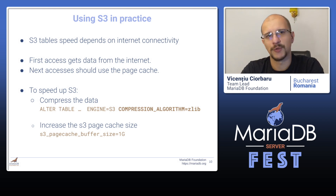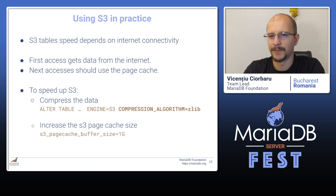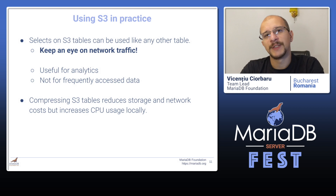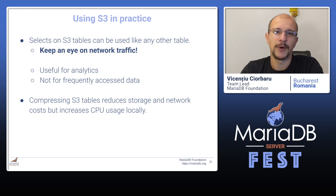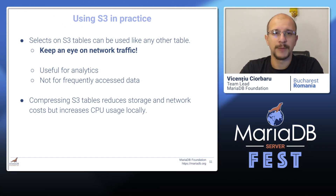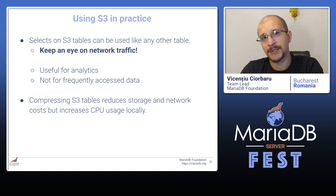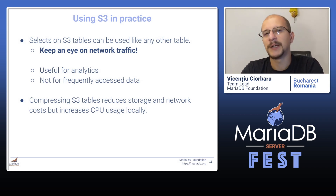If that is still not enough, you can choose to increase your page cache — that way you can store more blocks in memory and go less via the network. Because this is a network-based system, you need to keep an eye on network traffic. S3 providers will typically charge for your network traffic, which means S3 tables are nowhere near suited for operational use. However, they're very good for analytics and infrequently accessed data like backups or disaster recovery. By choosing to compress S3 tables, you reduce both storage and network costs, though you may become CPU-bound when accessing those tables.